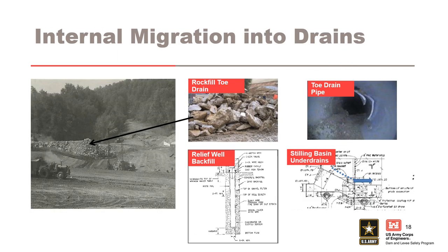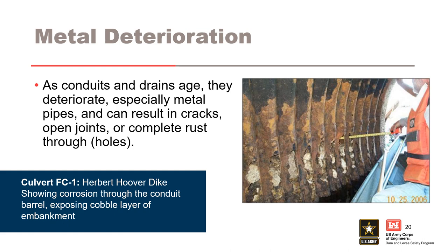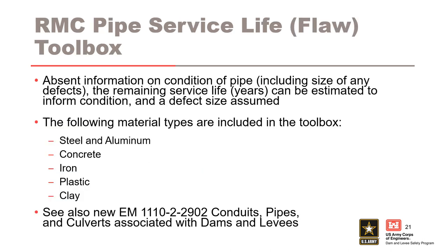Internal migration can also occur due to erosion into drains that are damaged or not properly sized as filters. These can include relief wells, toe drain pipes, rock fill toe drains, and stilling basin under-drains. All drain pipes should be inspected. Video inspection of pipes is essential to assessing the likelihood of having an open defect. Corrosion of metal pipes creates holes that become unfiltered exits. The photo on the right is an example of a corroded corrugated metal pipe at the Herbert Hoover Dike. If you don't have information from a recent inspection, the Pipe Service Life Toolbox can be used to evaluate pipes with respect to having a defect present that can help assess internal migration through that defect.